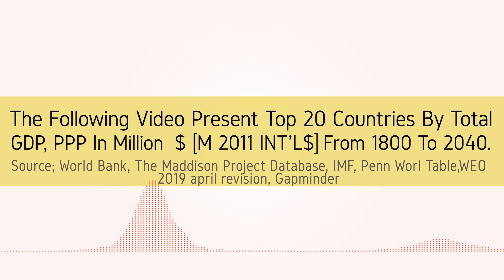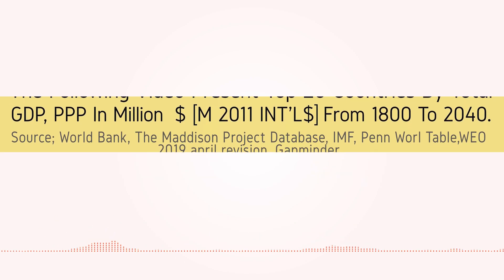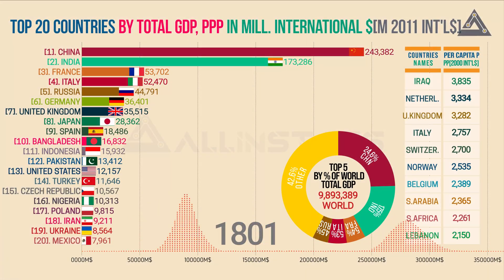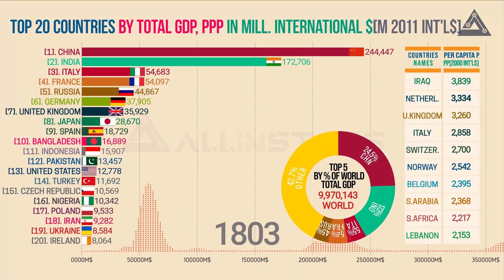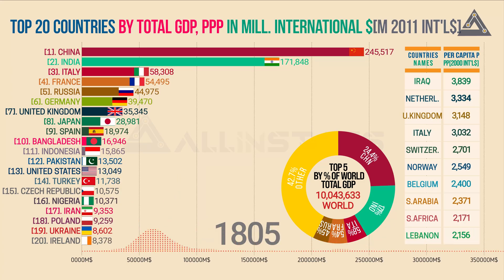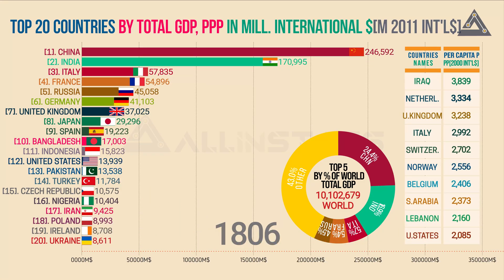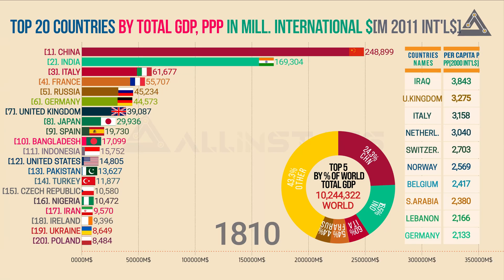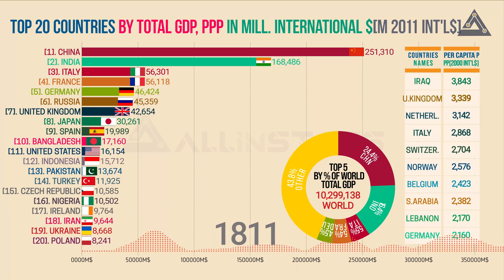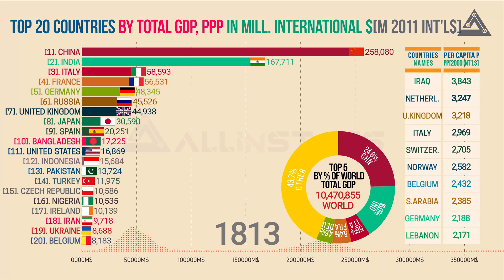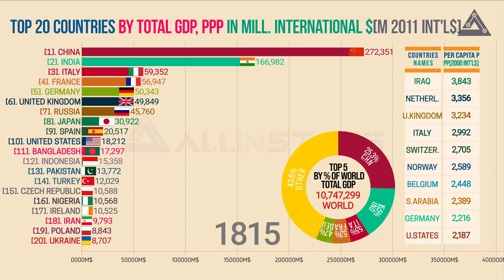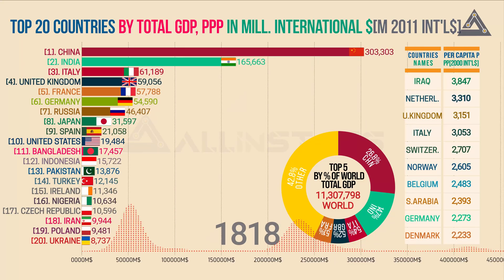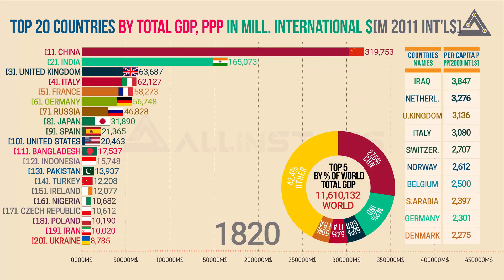The gross domestic product, GDP, of an economy is a measure of total production. More precisely, it is the monetary value of all goods and services produced within a country or region in a specific time period. In this video, GDP is converted to international dollars using purchasing power parity rates. An international dollar has the same purchasing power over GDP as the US dollar has in the United States.